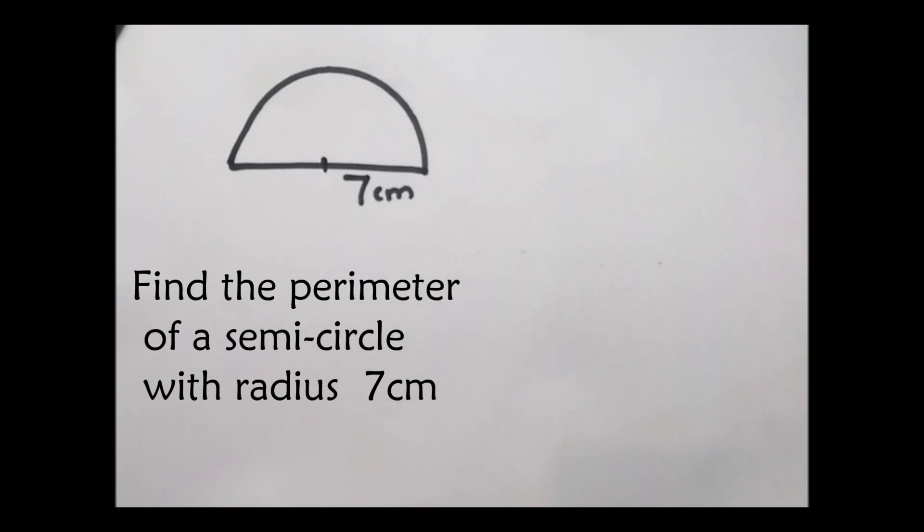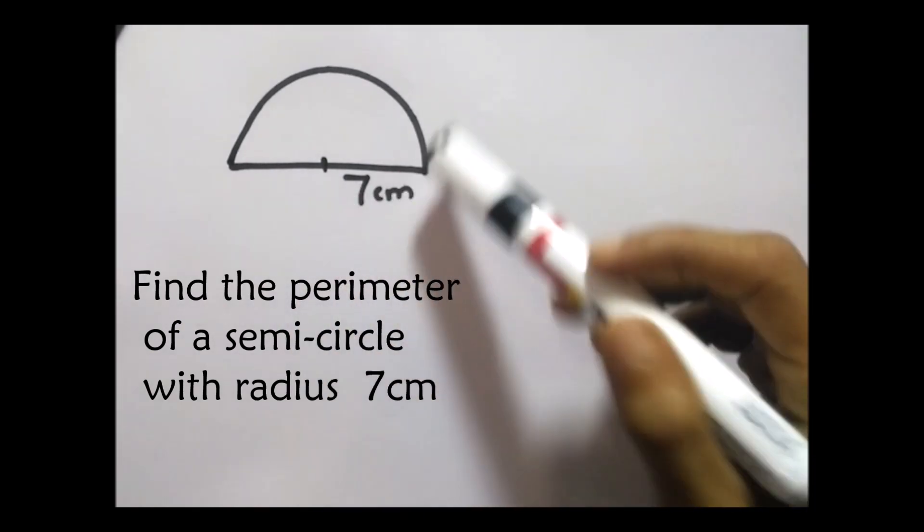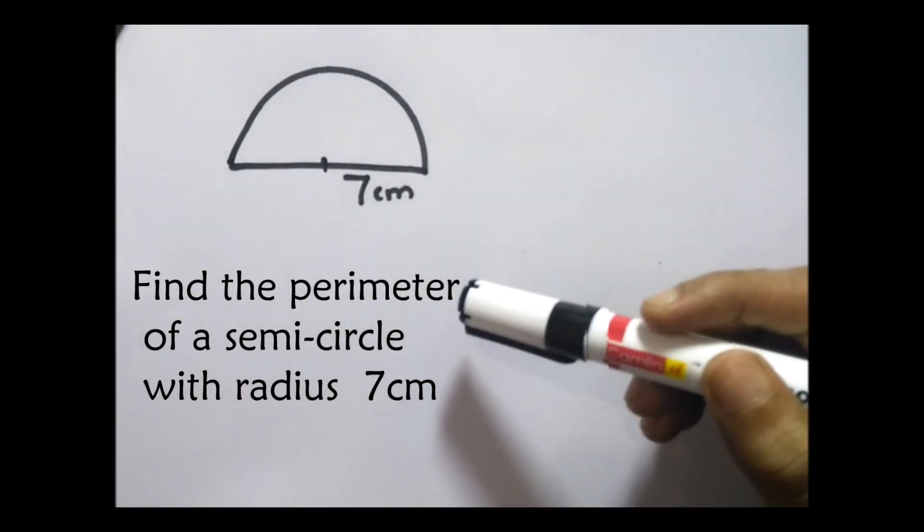Now the second question. They are asking us to find the perimeter of this diagram. To find the perimeter, they have given the radius - the radius is 7 centimeters and they have mentioned this as a semicircle. You can see the diagram. How do we calculate the perimeter?